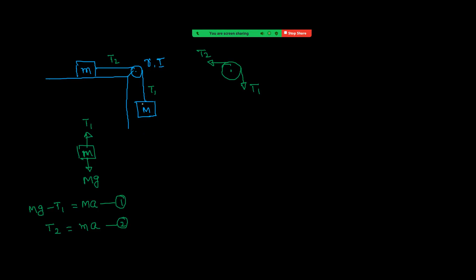Assuming M moves down, the pulley rotates clockwise, so net torque is clockwise. Taking clockwise as positive: T1·R − T2·R = I·α (equation 3). We have four unknowns: T1, T2, A, and α, and so far three equations.